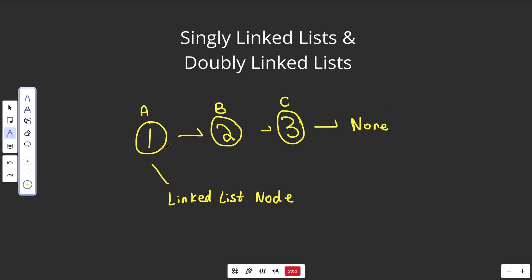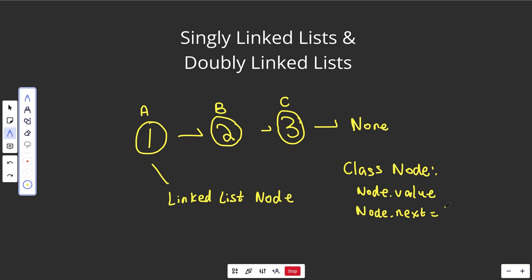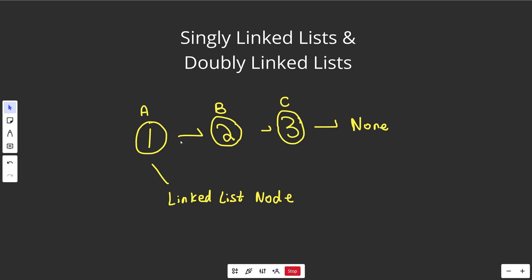So what actually is a linked list node? In a computer programming language we have things called classes, and classes create objects. You would have some sort of class node object — it would have a node.value and also a node.next. node.next is basically a reference to a different object. So node A would have a next of basically the address of B, saying its next address is pointing over to B. A's next points to B, B's next is C, and C's next is None — this forms a chain.